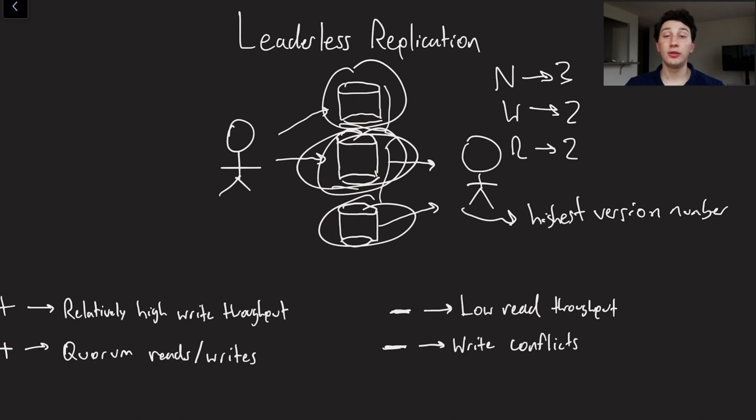And then this guy over here can pick the write with the highest version number. And so by picking the write with the highest version number for a given key, he might see Jordan is a 10 out of 10 on one with a version number of, let's say, 26. And then Jordan might also be from the other node, six out of 10, with a version number of 25. It means that the one where I'm a 10 out of 10 wins because that's version number 26. So that is kind of the gist of leaderless replication.